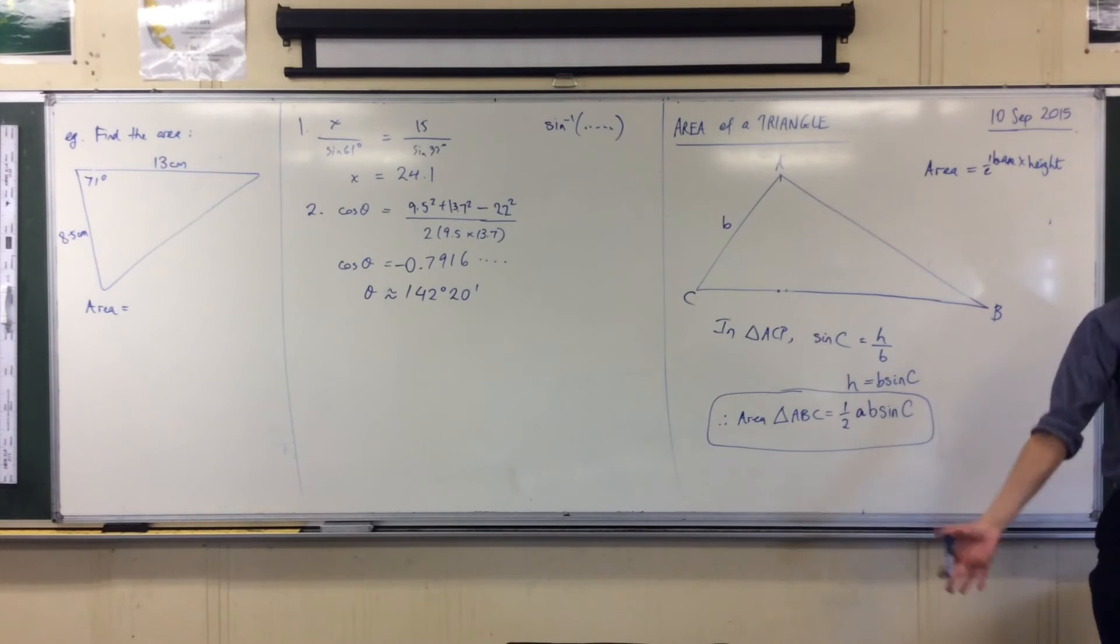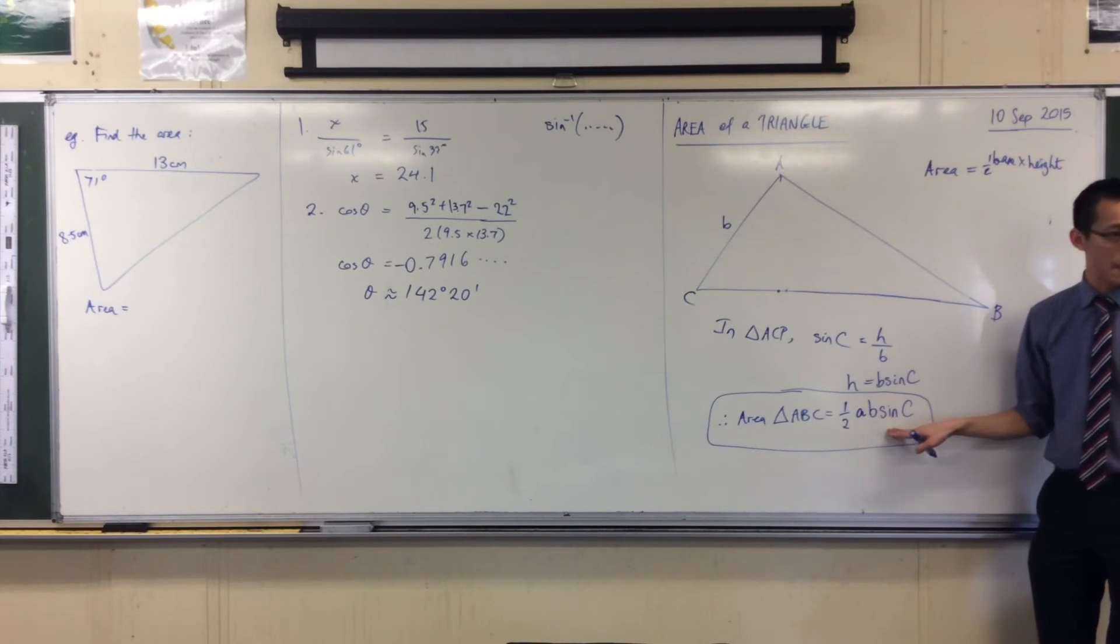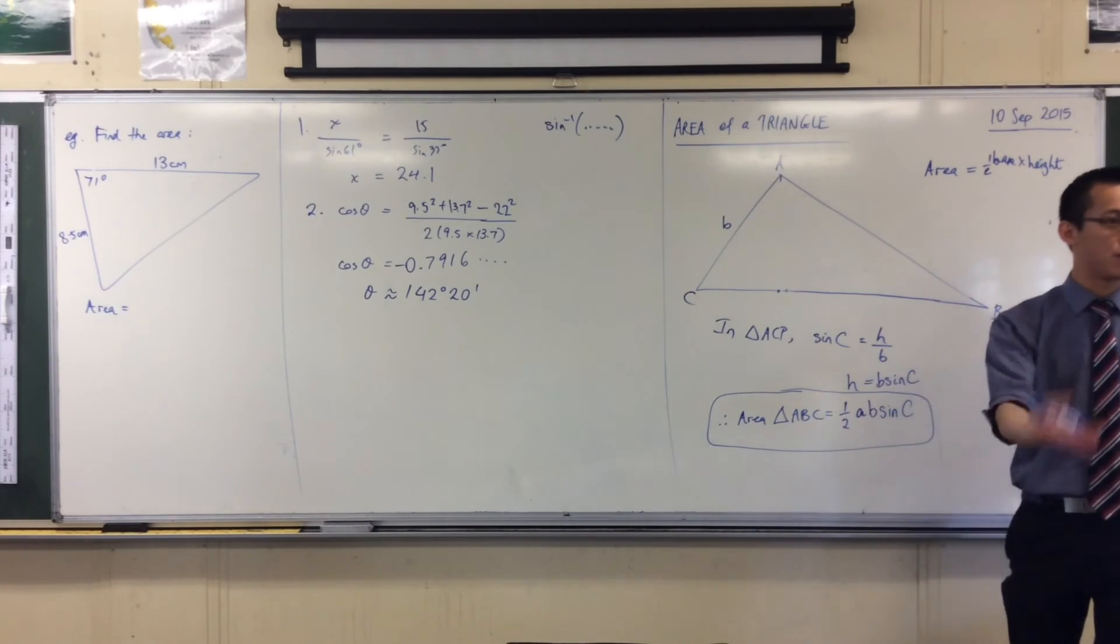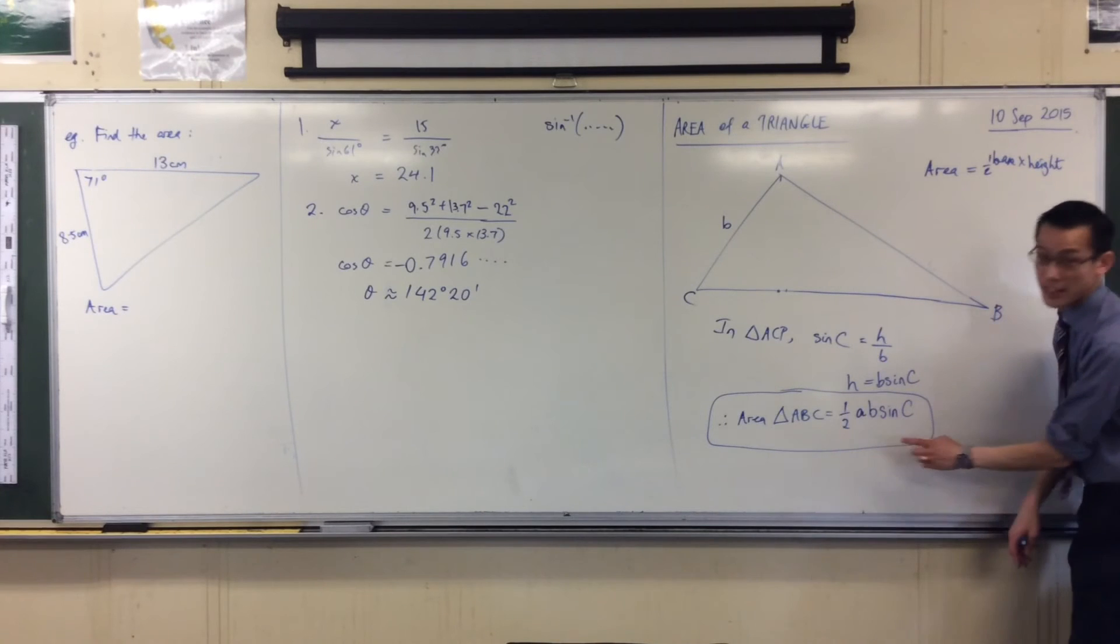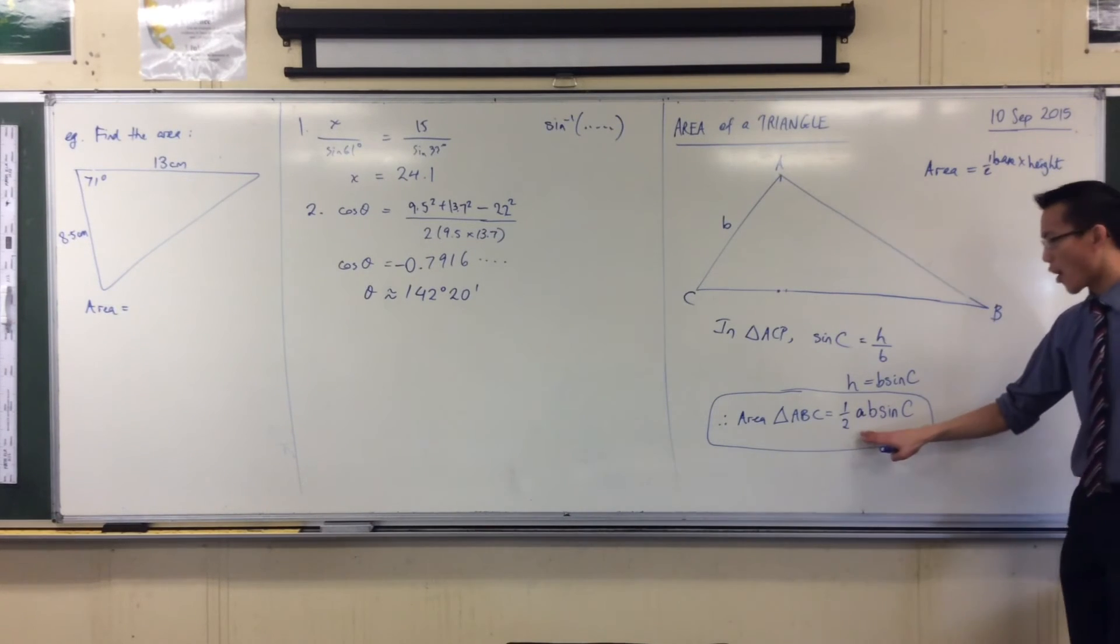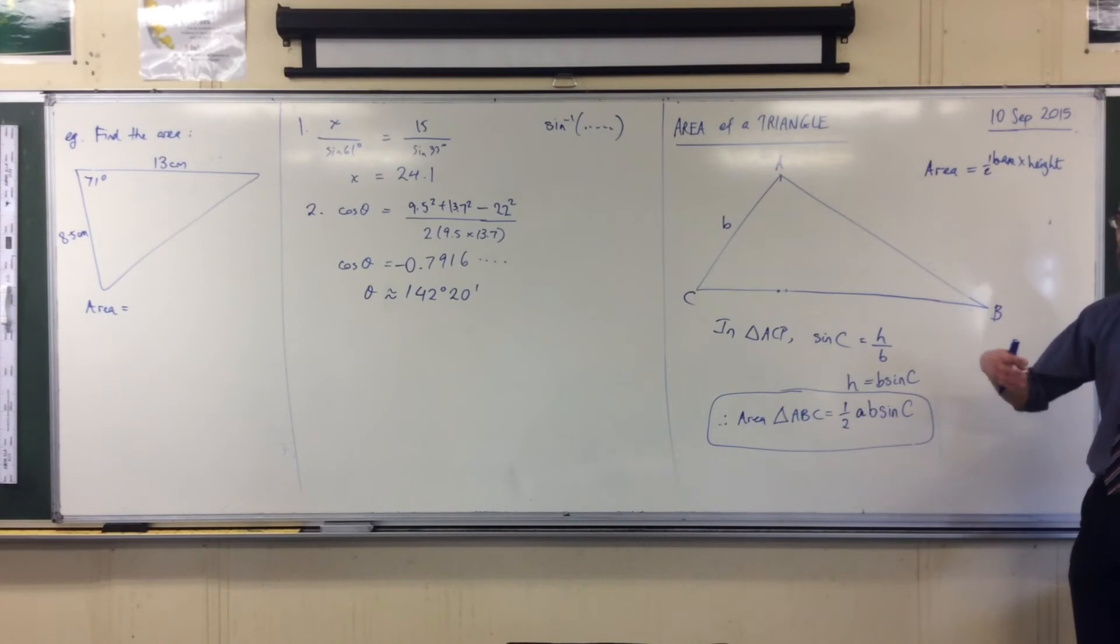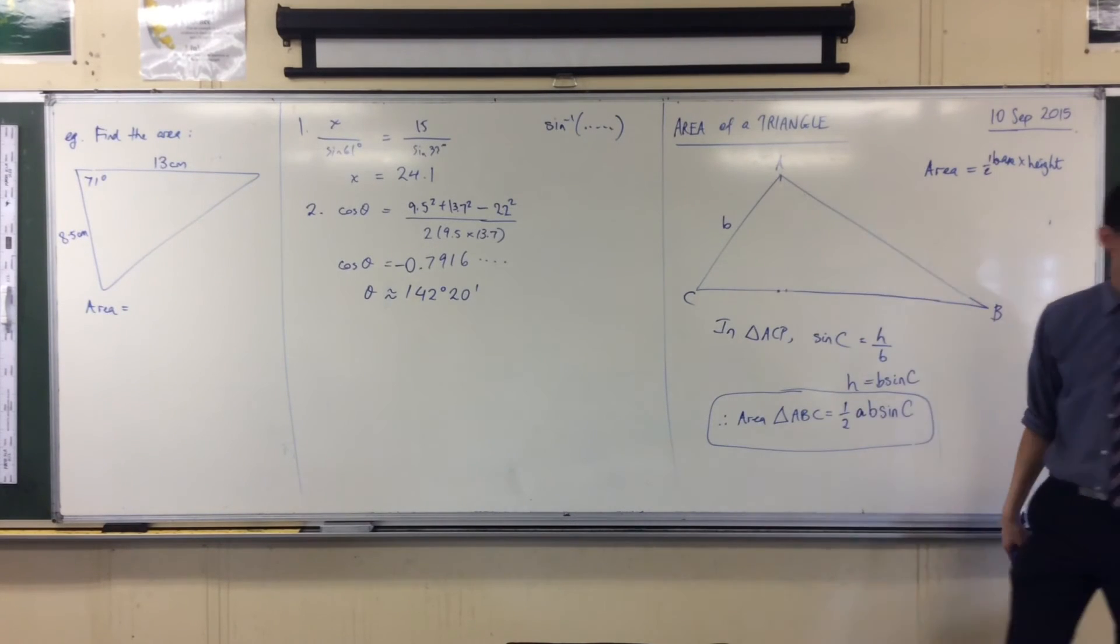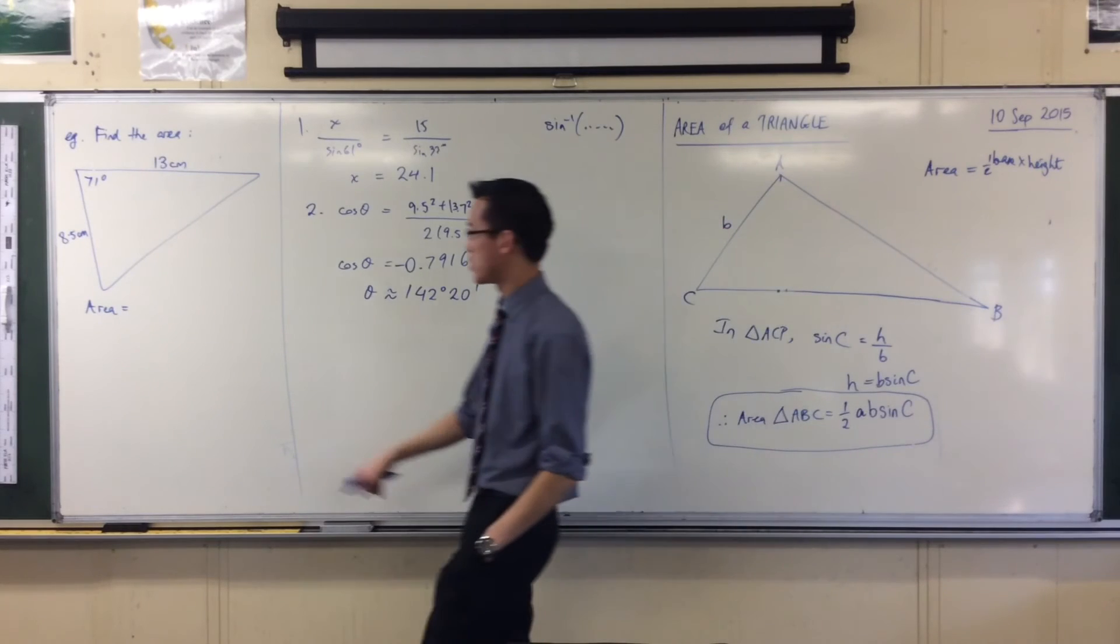You can see, just like with the sine rule or cosine rule, you're looking for particular pieces of information. Because you've got sine here, an easy way to recognize it is, you have two sides and an angle, which is usually what you're expecting for the sine rule. So, I can use these pieces of information to work out, instead of another angle, I can work out the area of the thing. So, let's quickly give this a go.